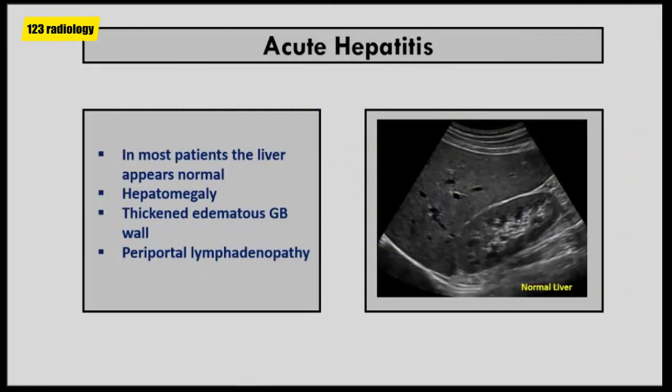Let's start with acute hepatitis. In acute hepatitis, there is diffuse swelling of the hepatocytes, proliferation of Kupffer cells, and infiltration of the portal areas by lymphocytes and monocytes. The sonographic features parallel the histologic findings. In most patients, the liver appears normal.